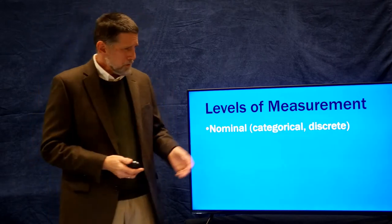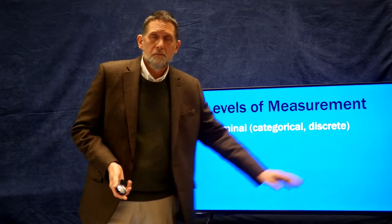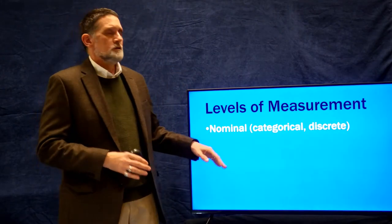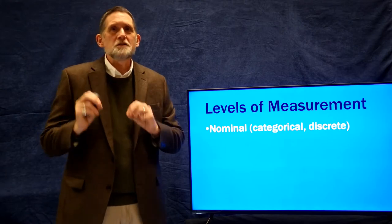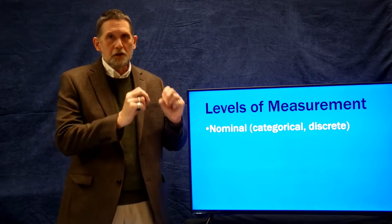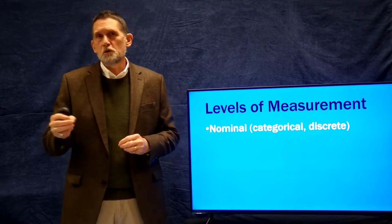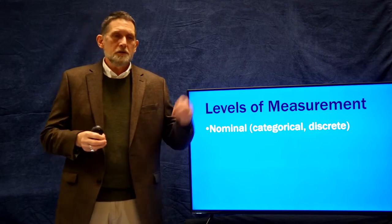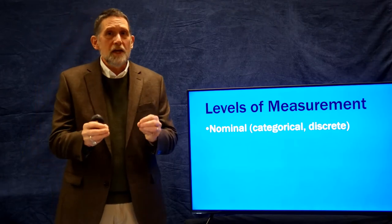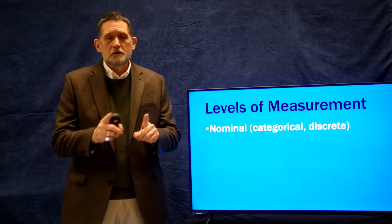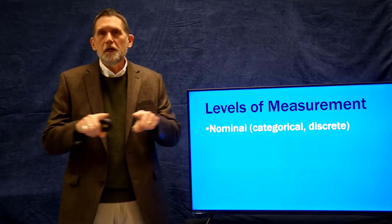The first level is called nominal — sometimes called categorical or discrete. Nominal variables are like little pigeonholes, little boxes. There's a category, and a good example of a categorical variable is male/female. You're either male or you're female — that's a category.